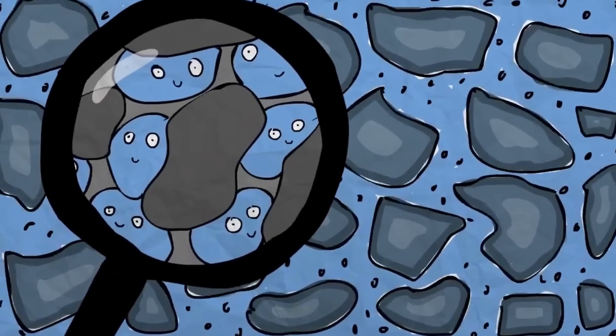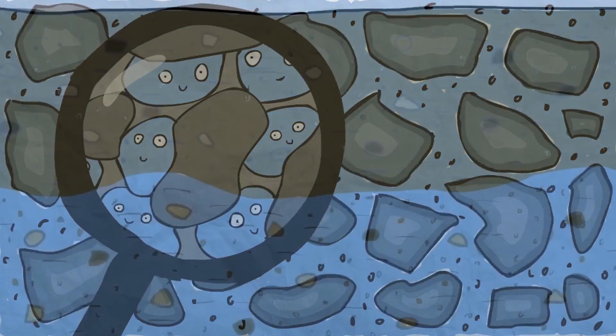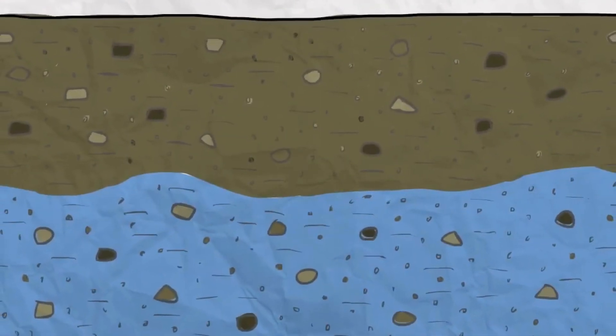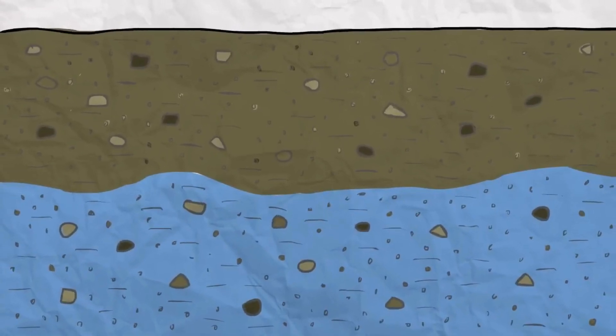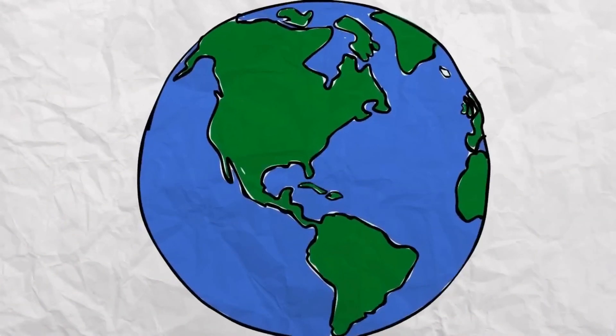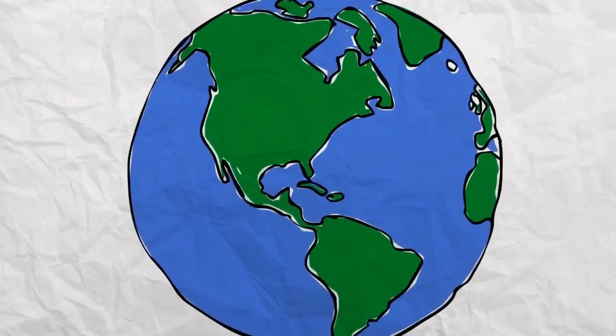The substance can contain up to 1.5 percent water, and if the ringwudite under the surface has just 1 percent water in its molecular buildup, it would mean that it holds three times more water than all of the oceans on the Earth's surface.